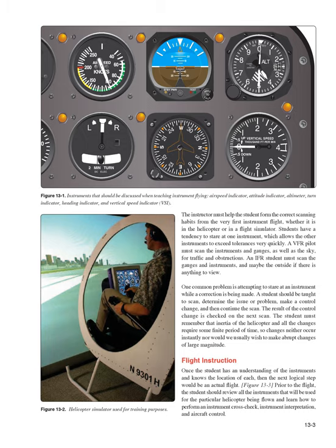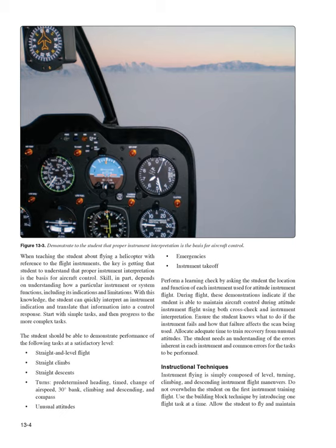Flight Instruction: Once the student has an understanding of the instruments and knows the location of each, the next logical step would be an actual flight. (Figure 13-3) Prior to the flight, the student should review all the instruments that will be used for the particular helicopter being flown and learn how to perform an instrument crosscheck, instrument interpretation, and aircraft control. When teaching the student about flying a helicopter with reference to the flight instruments, the key is getting that student to understand that proper instrument interpretation is the basis for aircraft control. Skill depends in part on understanding how a particular instrument or system functions, including its indications and limitations. With this knowledge, the student can quickly interpret an instrument indication and translate that information into a control response. Start with simple tasks and then progress to the more complex tasks.